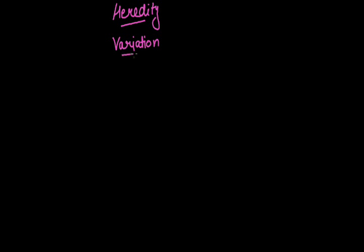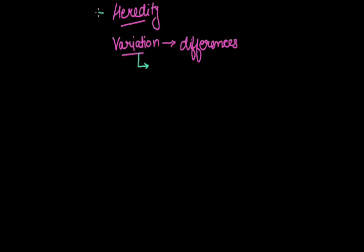And the differences — those variations — are the differences which occur among individuals of the same species. Suppose even siblings are not the same; they possess many differences among them. So these variations are the differences among individuals of the same species. The branch of science in which we study heredity and variation — how characters are transferred from parents to offspring and how variations arise in offspring — is known as genetics.